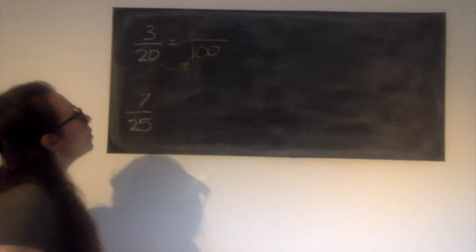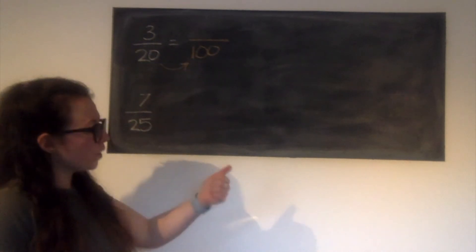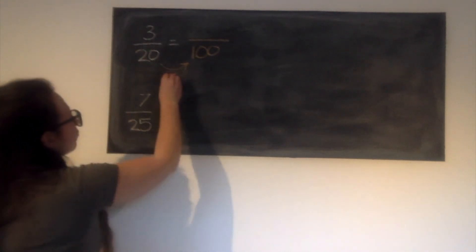So 20 multiplied by what gives me 100? 20, 40, 60, 80, 100. Multiplied by 5.